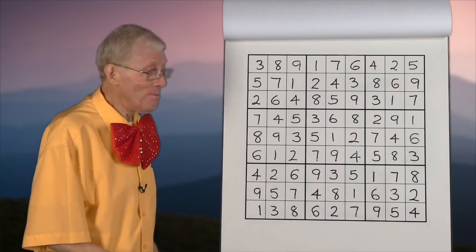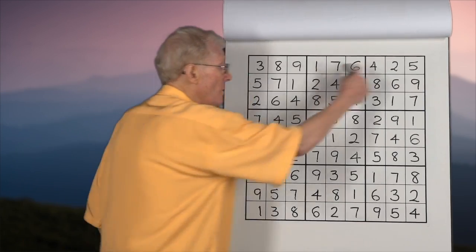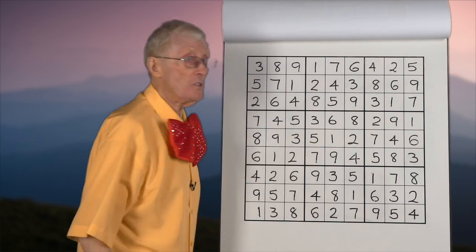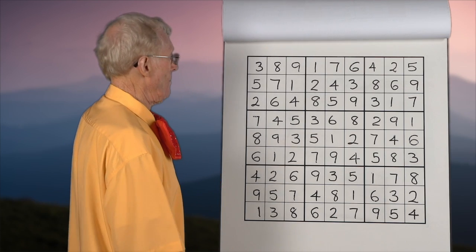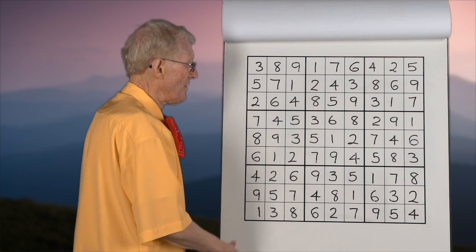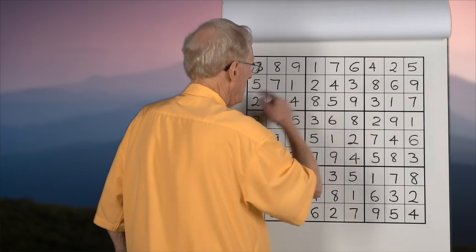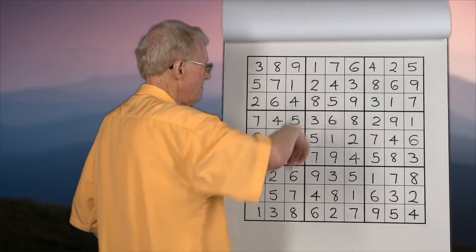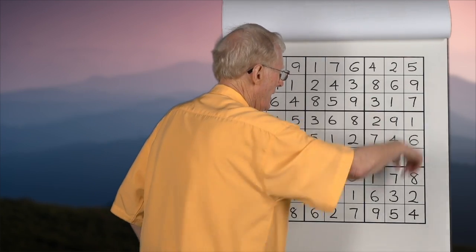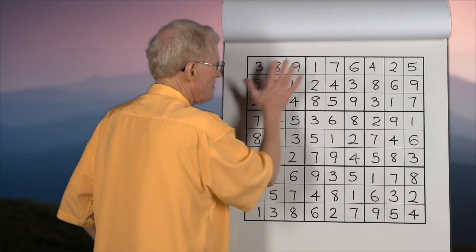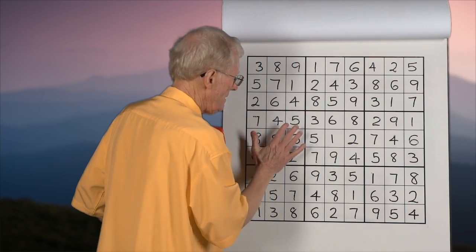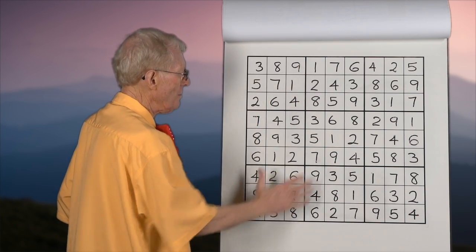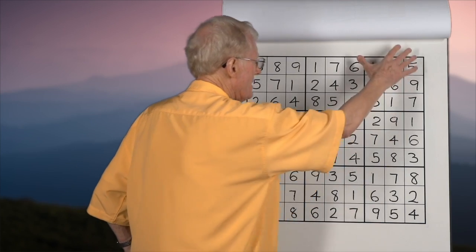If I repeated a number somewhere in a row or a column or a block, it would not have worked out. So if you look at this carefully, it's nine rows, as I said before, nine columns. Vertical, this is a horizontal block. Here and here, there's horizontal blocks, three of them. Here's vertical blocks. There's a vertical block, there's a vertical block, and there's a vertical block.